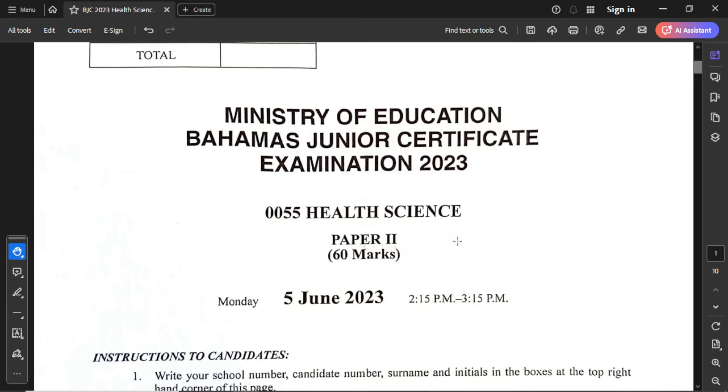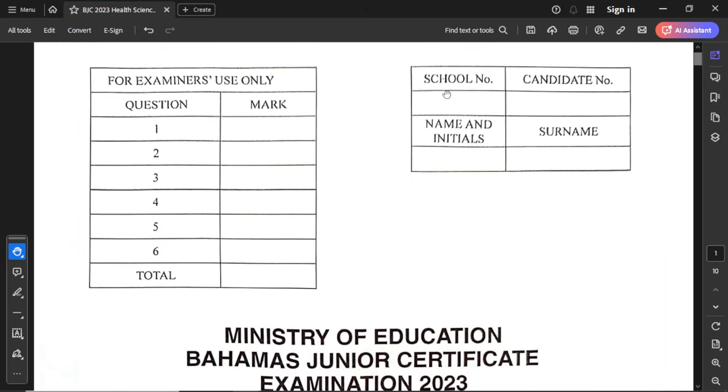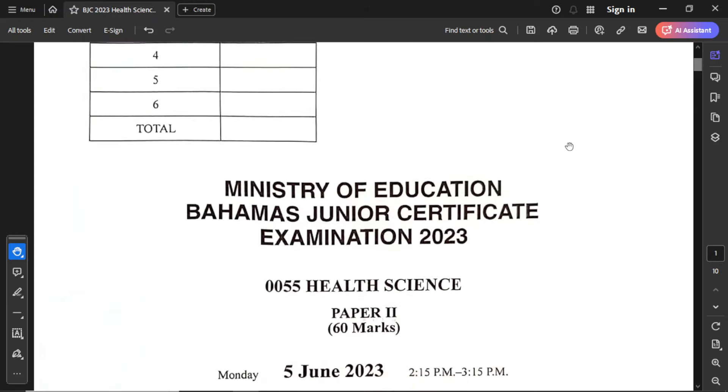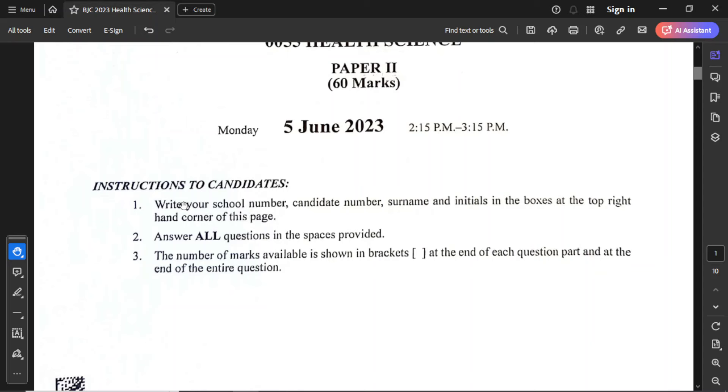Hello everyone, I hope you're doing great. Today we're looking at this 2023 BJC paper 2 for health science. Please remember if you start the examination, you should write your school number, candidate number, name and initials, and surname. It's important to read through the instructions carefully before you start, and if you have any questions, refer to your examiner before the examination begins.